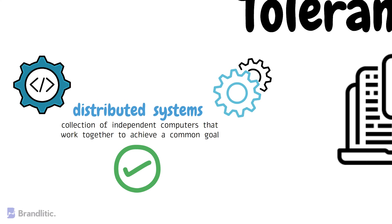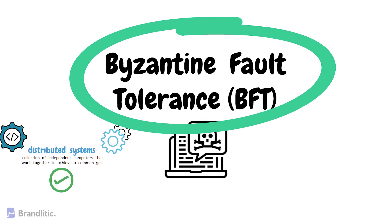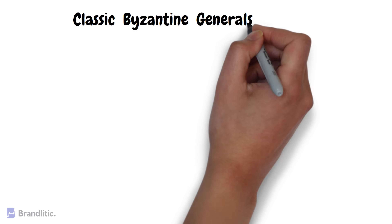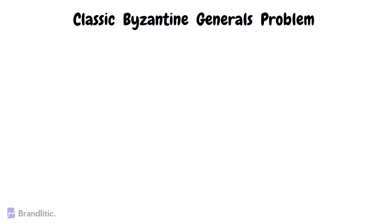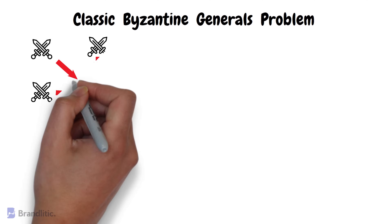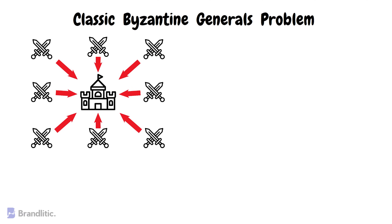This is where Byzantine Fault Tolerance comes in. The classic Byzantine generals problem is a thought experiment that illustrates the challenge of achieving consensus in a distributed system. Imagine a group of Byzantine generals who are planning to attack a city. The generals are located at different parts of the city and must communicate with each other to agree on a strategy.